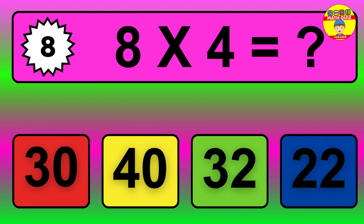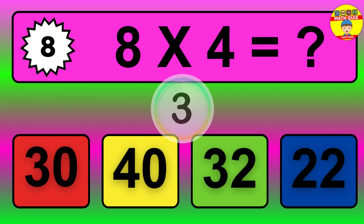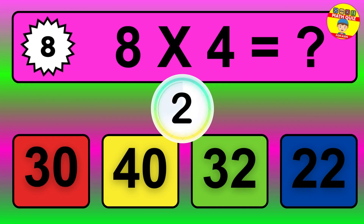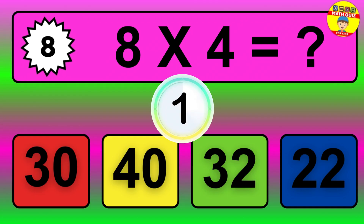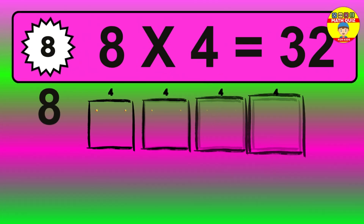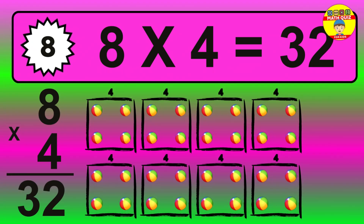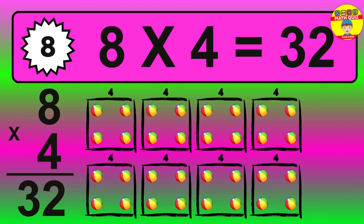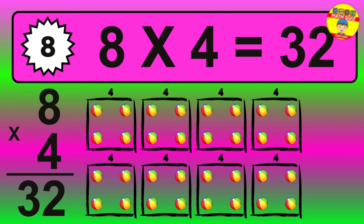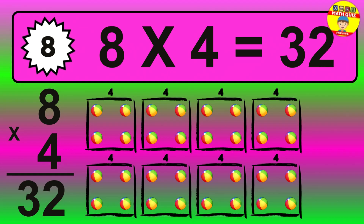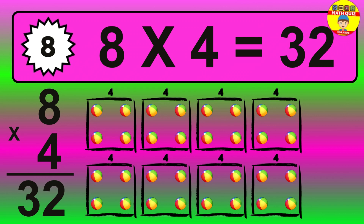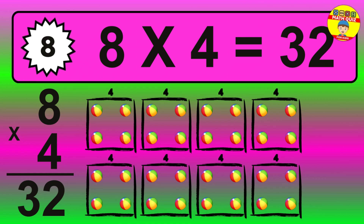Question 8. 8 times 4 equals what? The answer is 8 times 4 is 32. To calculate, we have 8 groups with 4 balls each one. So, how many balls do we have? 32 balls.